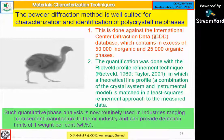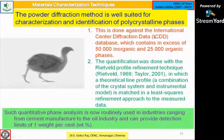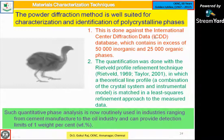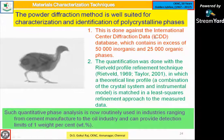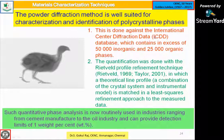Quantification is done with Rietveld refinement. We can go for Rietveld refinement to determine the internal structure. Such quantitative analysis is now routinely used in industries ranging from cement to oil industries, and can detect impurities down to one weight percent. Even if there is an impurity of one percent, we can always find the percentage of impurity.